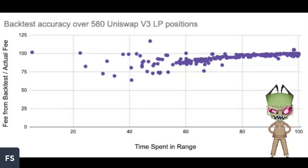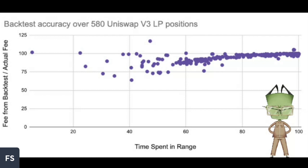The inverse of that is if the price was to pump and go above 10% of the current price, you would be outside of your range and you would have taken all of the wrapped BTC that you have in your liquidity position and filled USDT orders with it. So now you'll be holding 100% USDT.